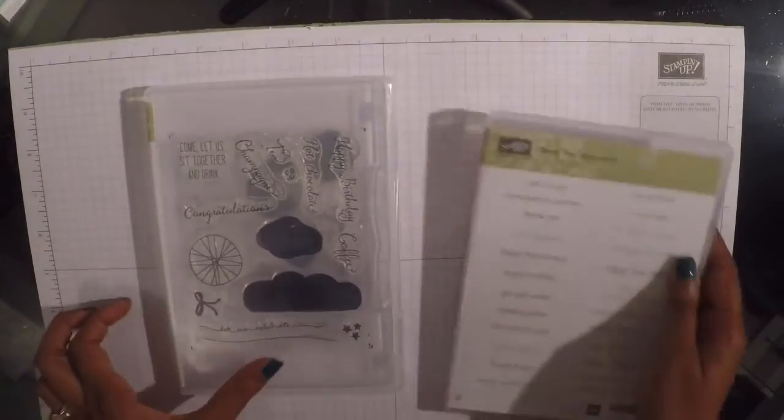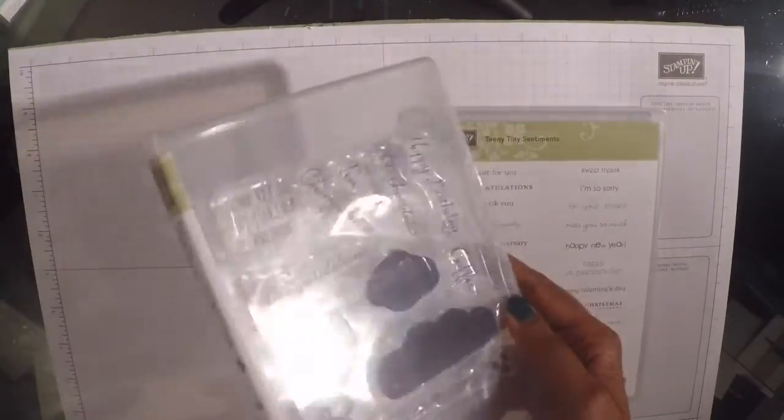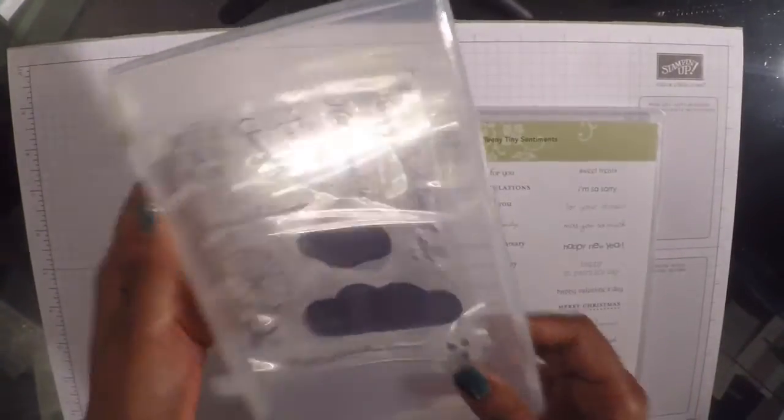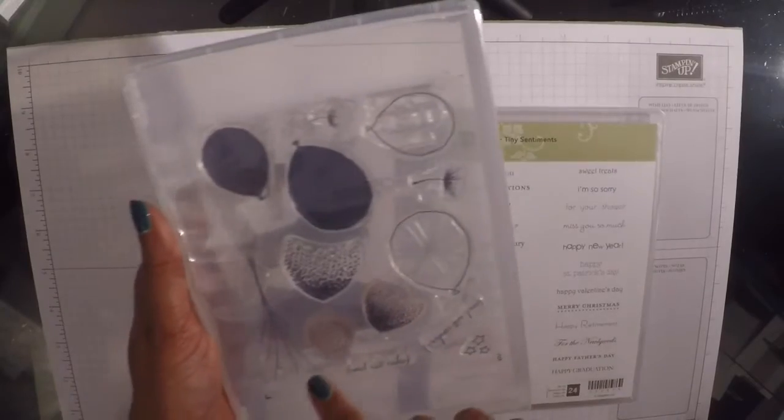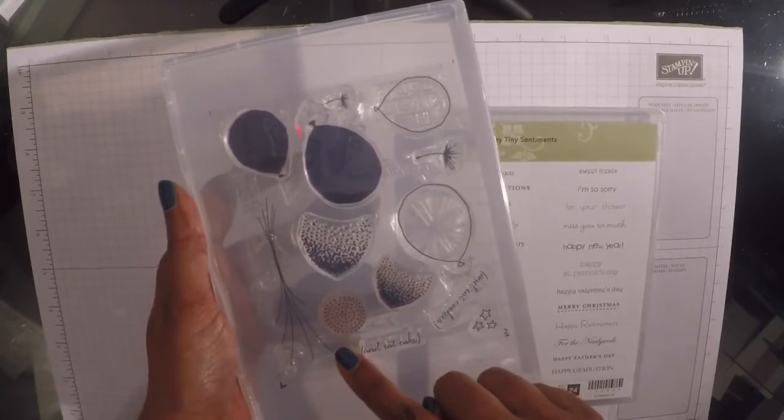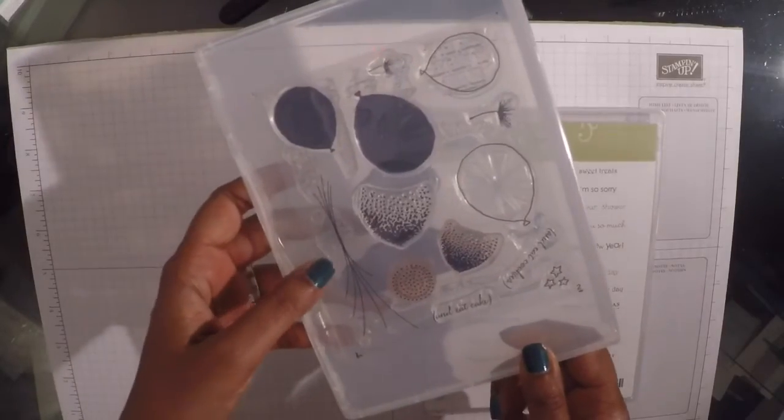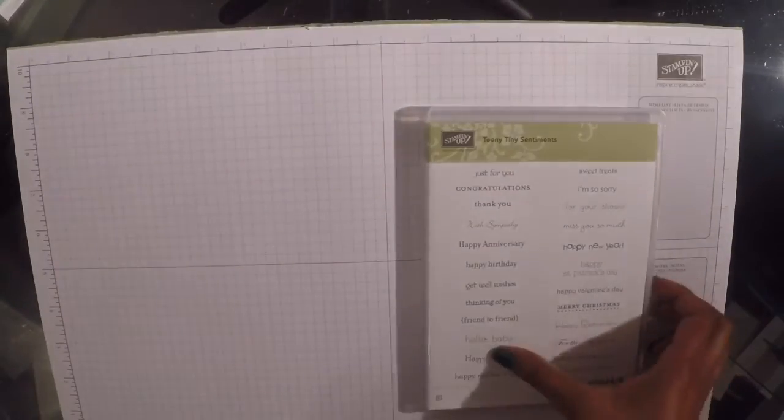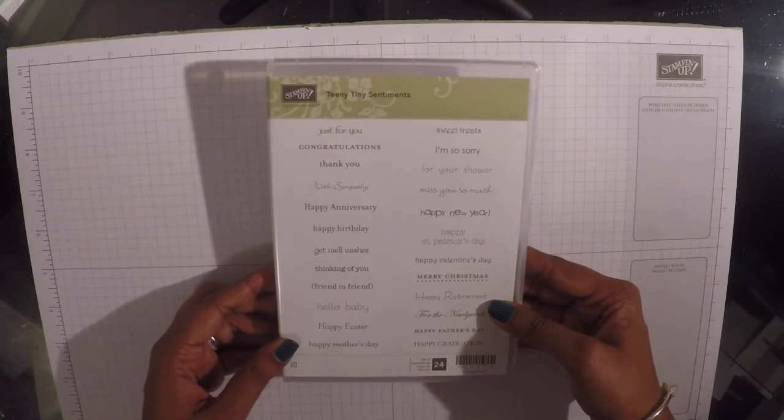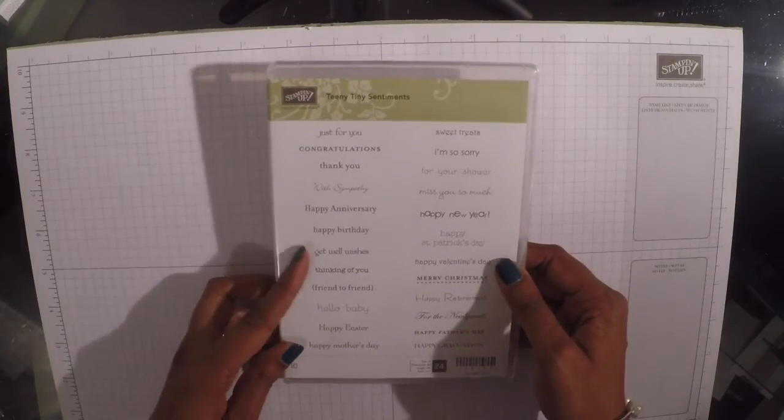The stamp sets we're going to be using today are Balloon Celebrations, and actually the only stamp image I'm going to be using from this collection today is the actual balloon strings, a bunch of balloon strings there. And then I'm also going to be using my sentiment from Teeny Tiny Sentiments and I'm going to be using the Happy Birthday one.